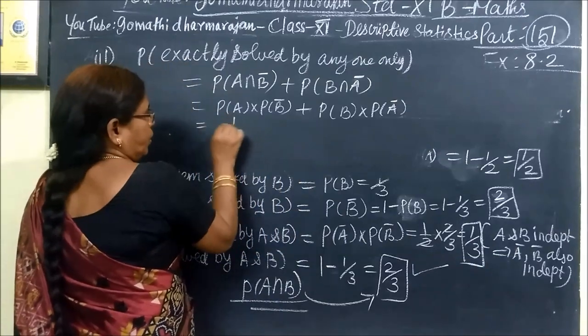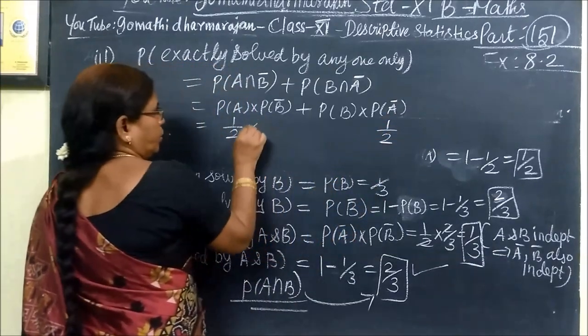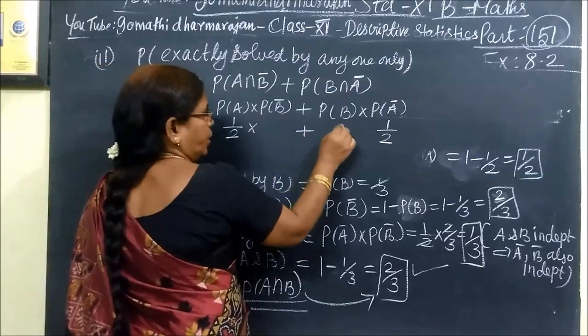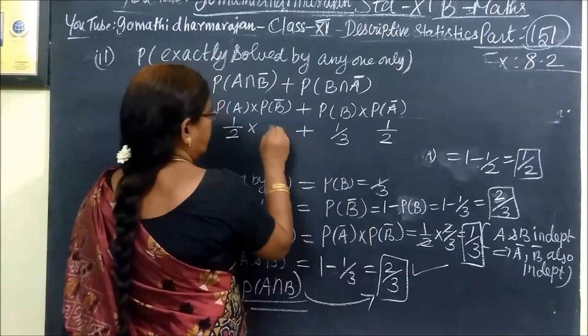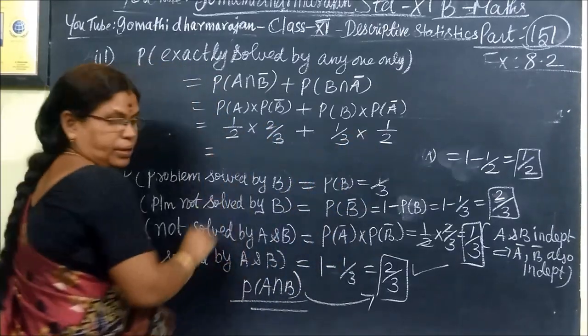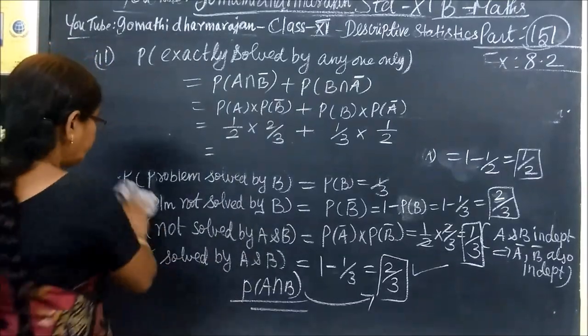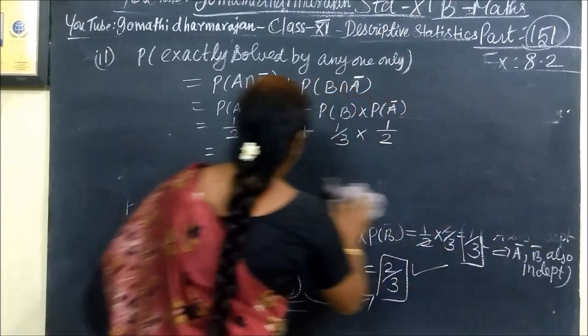Then P of B into P of A bar. So this is equal to P of A, 1/2. P of A bar, 1/2. Then P of B, 1/3. 1/3. Then P of B bar, 2/3. Then P of A bar, 2/3.